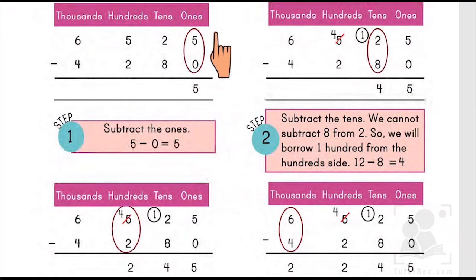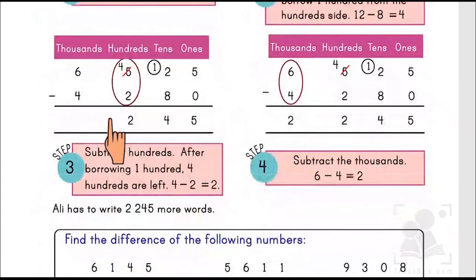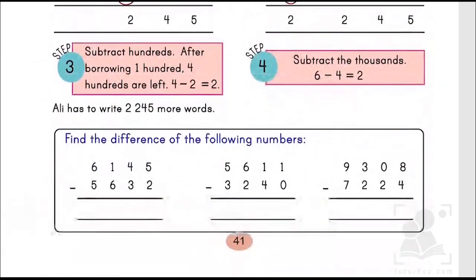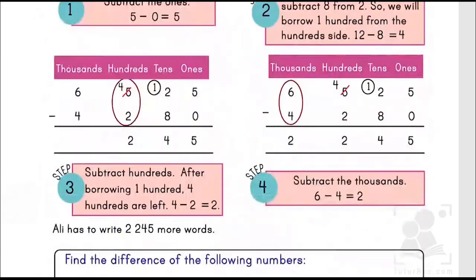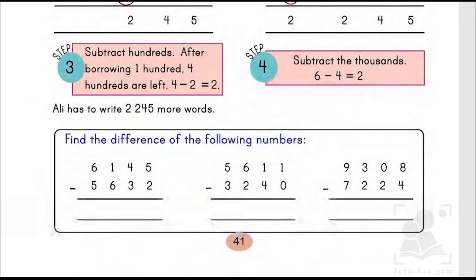We need to subtract 0 from 5, it becomes 5. Subtracting the tens: since we cannot subtract 8 from 2, what we are going to do is we are going to carry 1 from 5, it becomes 4, and this becomes 12. 12 minus 8 becomes 4.